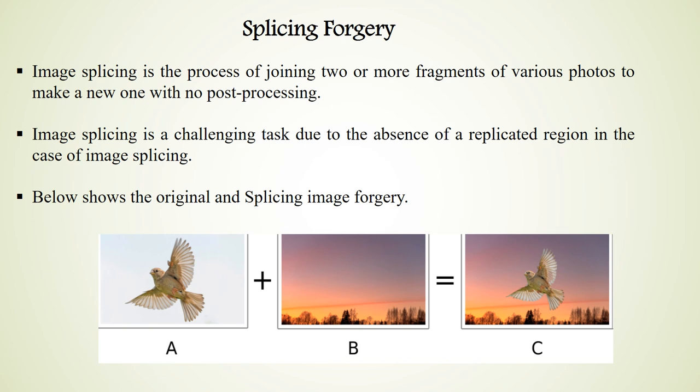Image splicing is the process of joining two or more images from various photos to make a new one with no post-processing. Image splicing is a challenging task because of the absence of a replicated region. As you can see in the figures below, images A and B are joined to produce the spliced image C.